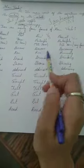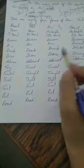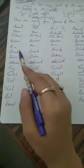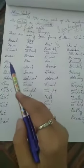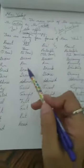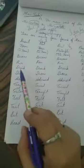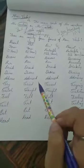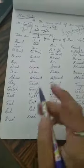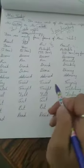Examples of verb forms: become, became, become, becoming. Run, ran, run, running. Drink, drank, drunk, drinking. Shine, shone, shone, shining. Advise, advised, advised, advising. Cry, cried, cried, crying. Catch, caught, caught, catching.